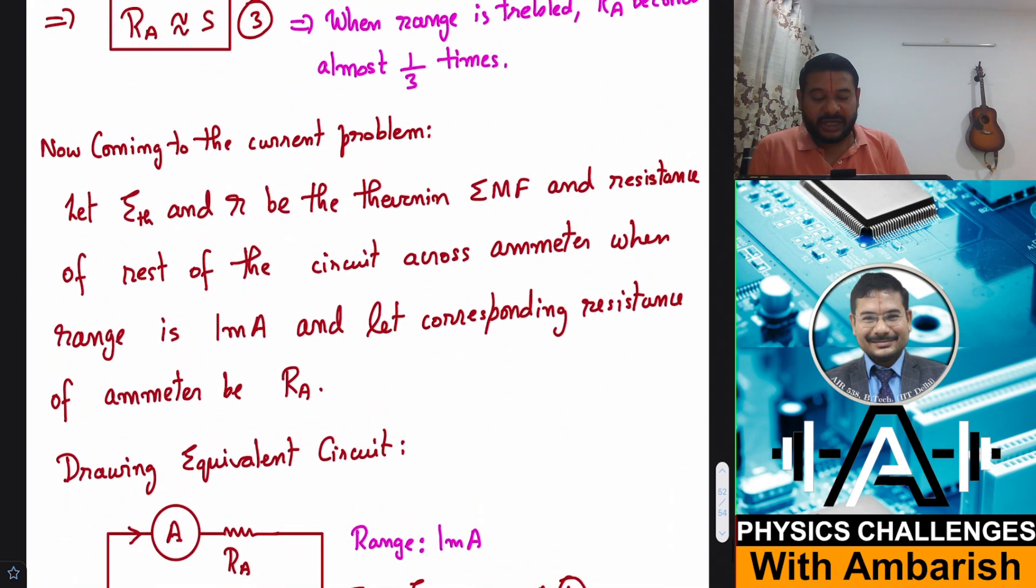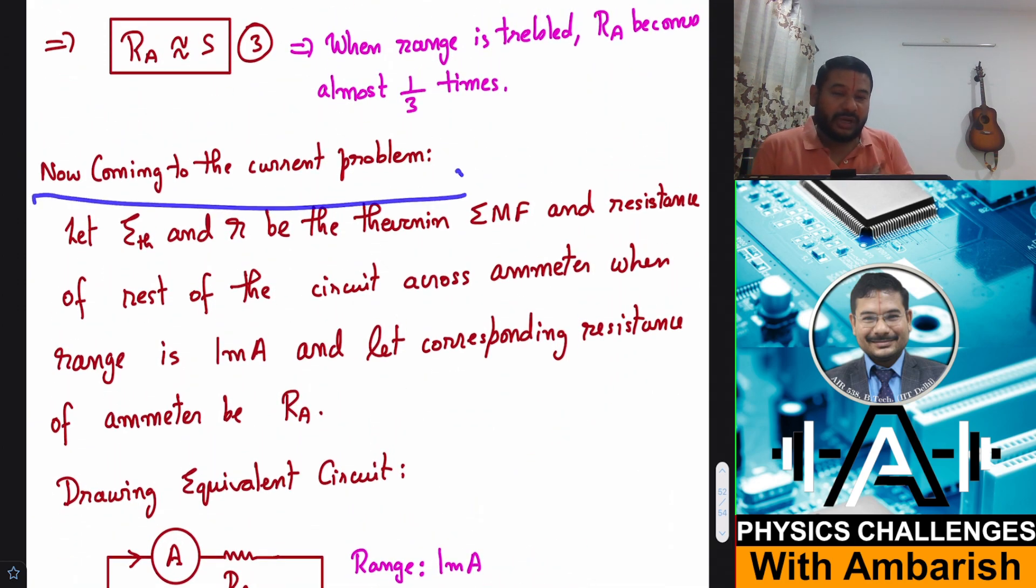Now coming to the current problem, whatever be the circuit I can always create a Thevenin equivalent across the ammeter. If you are not familiar with Thevenin equivalent you can search for the Thevenin video on my channel. I have given the detailed proof. Here I am going to use Thevenin directly. Let E_R and R be the Thevenin EMF and resistance of the rest of the circuit across the ammeter when the range is 1 milliampere and let the corresponding resistance of the ammeter be RA.